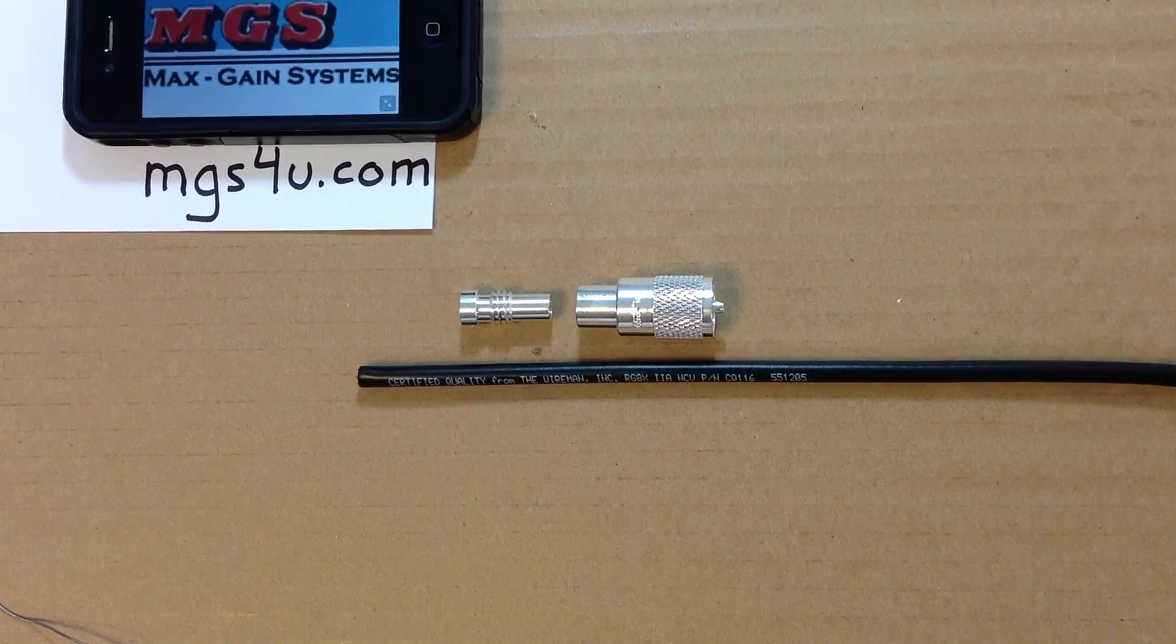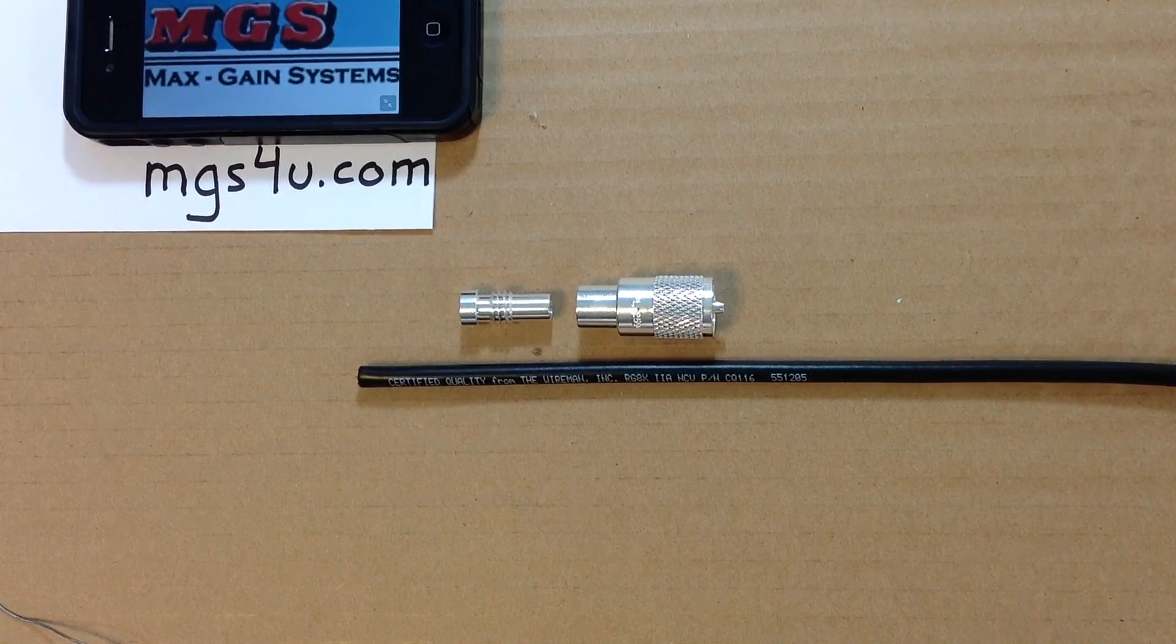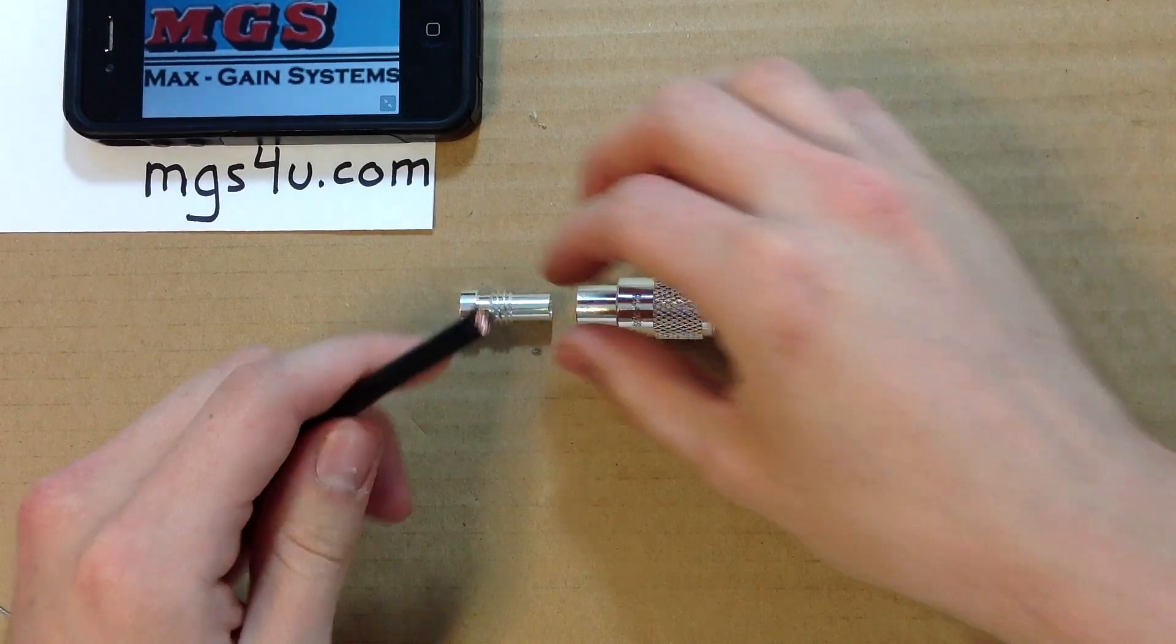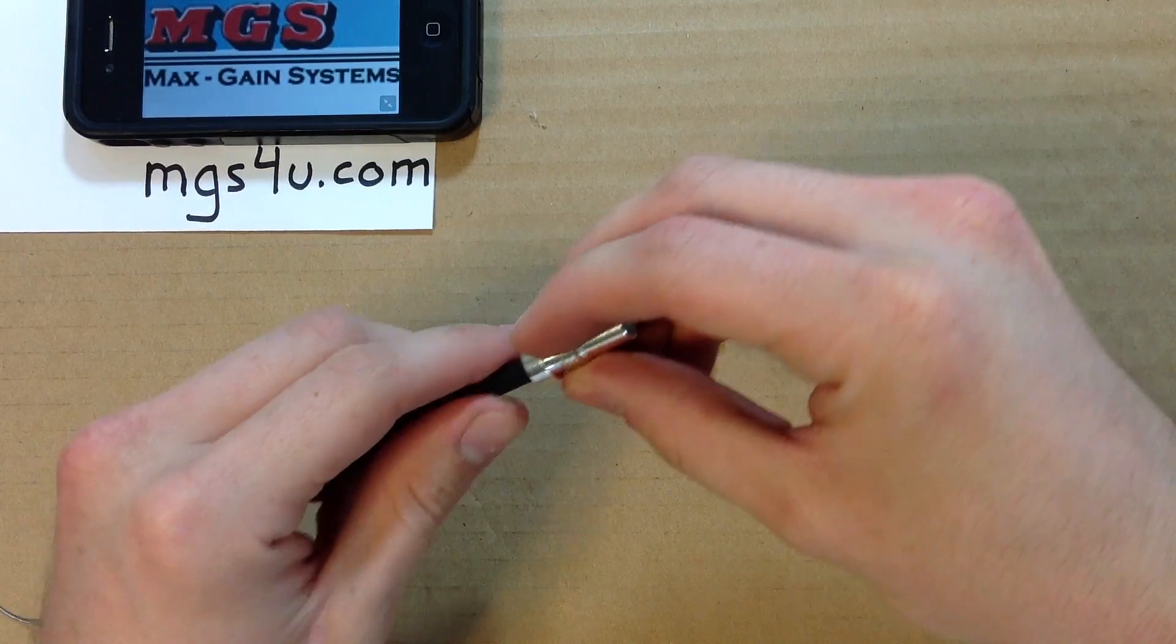This is an installation video of a PL259 supplied by MaxGainSystems at MGS4U.com onto RG8X coaxial cable supplied by The Wireman at TheWireman.com.